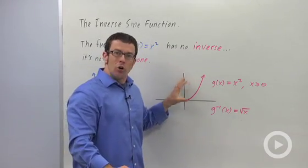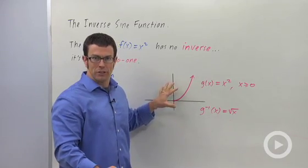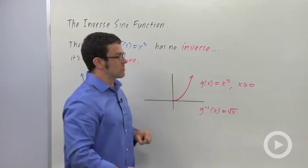So this idea, the idea of domain restriction to make the function one-to-one, is how we make the trig functions invertible and how we get the inverse trig functions.